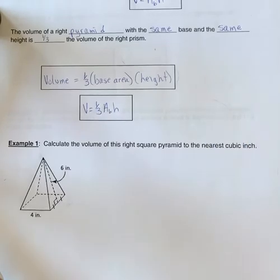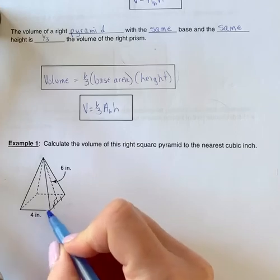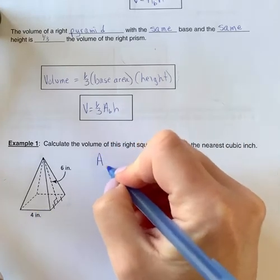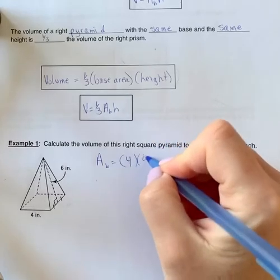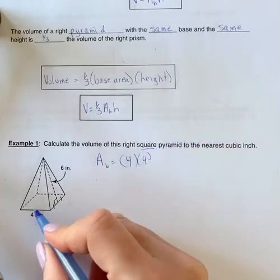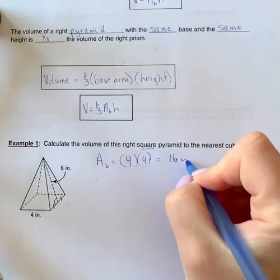So if we're going to look at this, we're going to have to figure out the area of the base. So the area of the base first would be four times four. It's a square, so that's how come I know that each side is the same. So that's 16 inches squared.